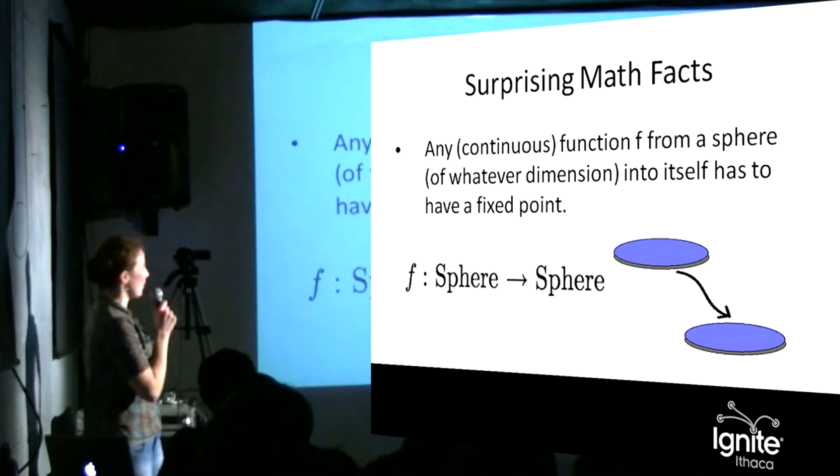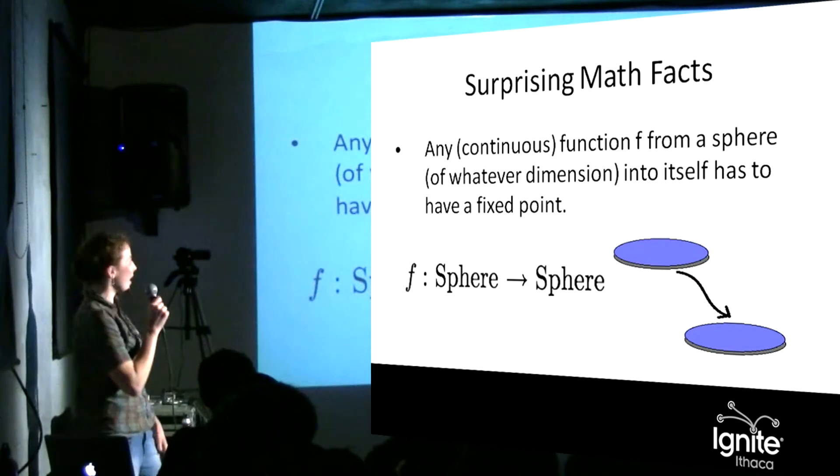So this is sort of a math intermission fact, just segueing away from that. This statement: anytime you map a ball into itself, one point stays fixed. You could rephrase this, this is just another cool math fact to tell your friends. This is a cool one too: if I take a map of Ithaca, crumple it up and throw it on the ground, a point on the map is sitting above its real world place.